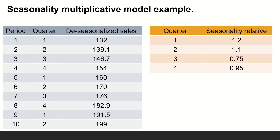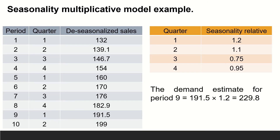Now we have to multiply them by the seasonality relative to find the seasonal forecast. Period 9 represents the first quarter while period 10 represents the second one. Thus, the demand estimate for period 9 = 191.5 × 1.2 = 229.8. The demand estimate for period 10 = 199 × 1.1 = 218.9.